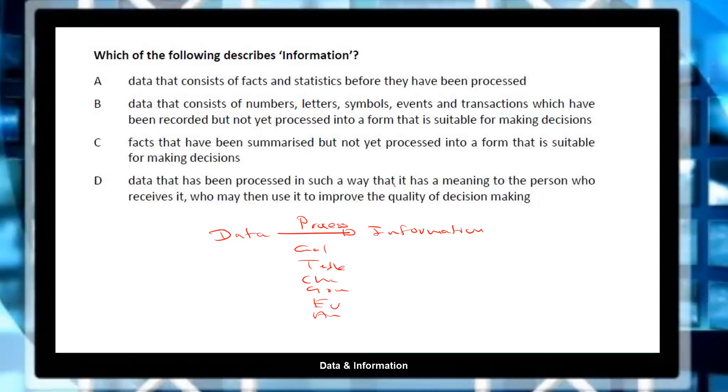Option D: data that has been processed in such a way that it has a meaning to the person who receives it, who may then use it to improve the quality of the decision. So as I said, you take data, process it, it will become information. Using this information you can take good decisions.